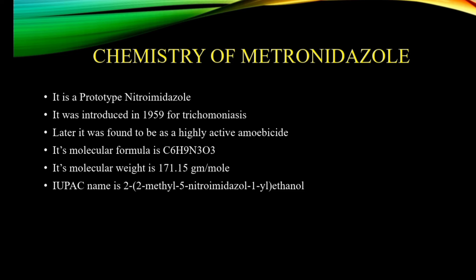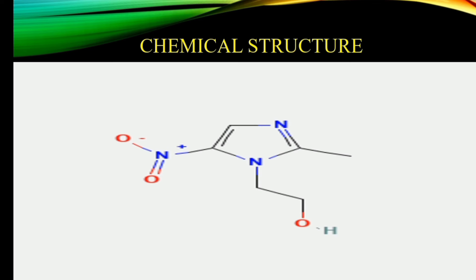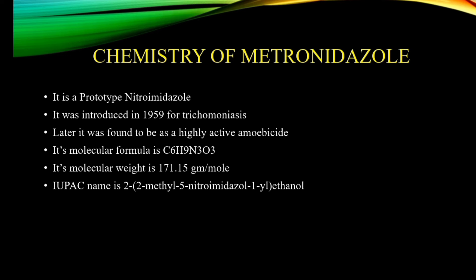Its molecular formula is C6H9N3O3, as we can see in the structure. The molecular weight is 171.15 grams per mole. The IUPAC name is 2-(2-methyl-5-nitroimidazole-1-yl)-ethanol. So this is the chemistry related to metronidazole.